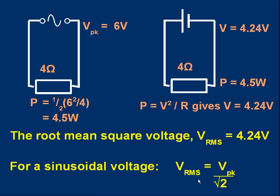Just like current, there's an easy way to work it out providing we've got a sinusoidal waveform: V_rms is simply the peak value divided by √2. So if I divide 6 by √2 I get 4.24 volts — that's the steady voltage that would produce the same power as this peak alternating supply.